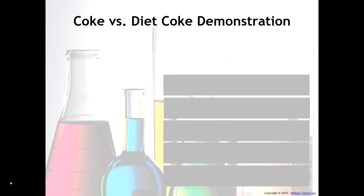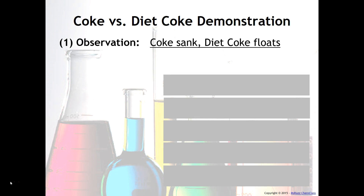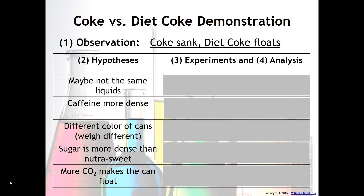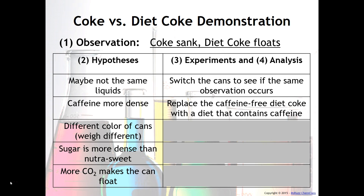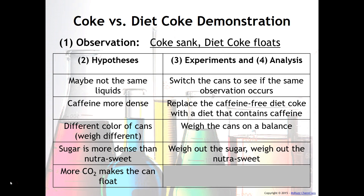Then we had to experiment. To test whether the liquids were different, we switched the two cans — and when we switched them, nothing changed: the Coke still sank and the Diet Coke was still floating. To test the caffeine density hypothesis, we replaced the caffeine-free Diet Coke with a Diet Coke that does contain caffeine. We also took the mass of each of the cans on a balance and saw that they were virtually very similar. We weighed out the sugar and the NutraSweet, and finally we collected the amount of CO2 gas from each can. These are all examples of experiments.